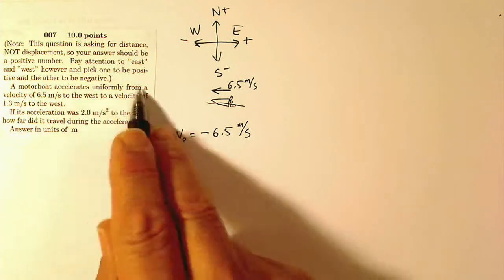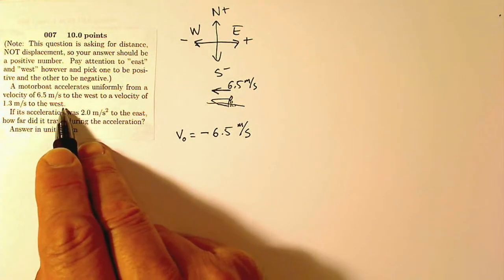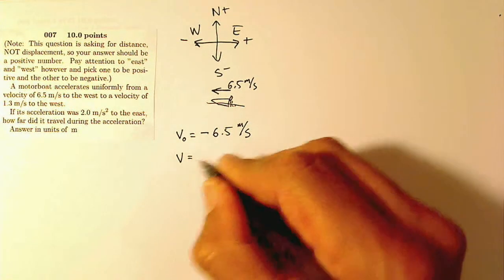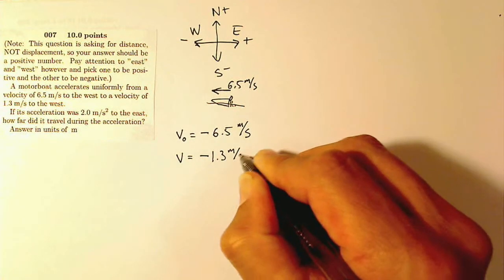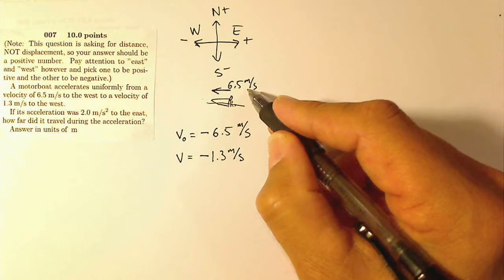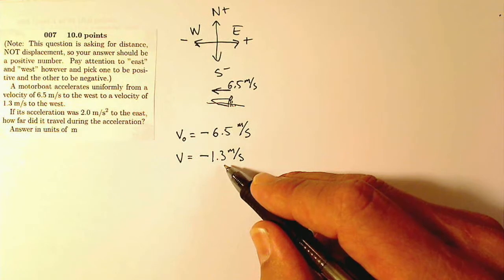Then it accelerates uniformly to a velocity of 1.3 meters per second to the west. So what's happening is my final velocity is negative 1.3 meters per second. So it was going fast. It ends up going slow in the same direction to the west.